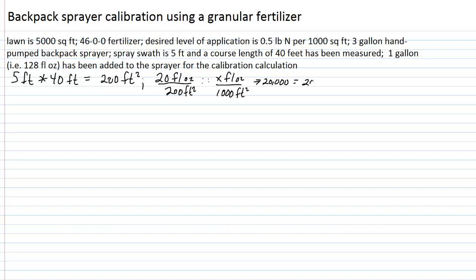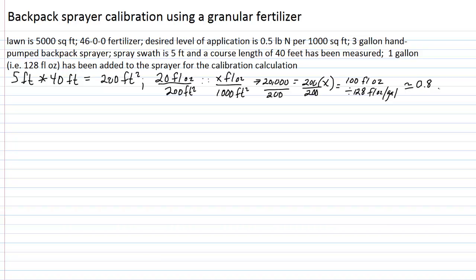We get 20,000 equals 200 times x. Divide both sides by 200 and x turns out to be 100 fluid ounces per thousand square feet. Now we can determine the gallon equivalent: 100 fluid ounces divided by 128 fluid ounces per gallon gives us approximately 0.8 gallons — eight-tenths of a gallon — per thousand square feet. That's what your sprayer is calibrated to deliver.